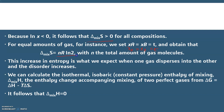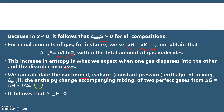For equal amounts of gas, xₐ = x_b = 0.5, we obtain Δ_mix S = nR ln 2, where n is the total number of moles. The increase in entropy is expected when one gas disperses into the other and disorder increases. For the isothermal isobaric enthalpy of mixing, since ΔG = ΔH − TΔS, it follows that Δ_mix H = 0 for two perfect gases.